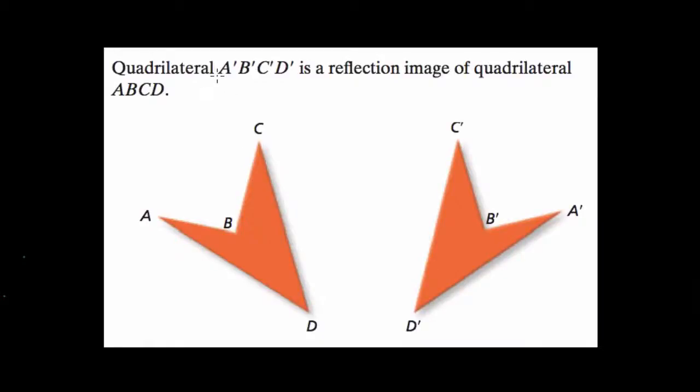Here we're told that quadrilateral A prime B prime C prime D prime—a quadrilateral means a four-sided shape, and here it is on the right. Follow the order A prime to B prime to C prime to D prime, and then we close it. It's a quadrilateral.